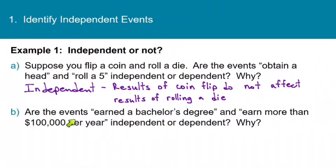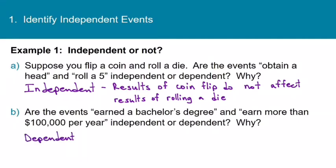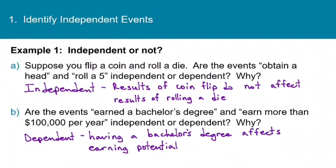In part B, are the events 'earned a bachelor's degree' and 'earned more than $100,000 per year' independent or dependent, and why? We know that people with a bachelor's degree earn more on average. So it's safe to say that earning a bachelor's degree does affect the probability of earning $100,000 a year. These two events are dependent because the occurrence of the bachelor's degree does affect the probability that you'll earn $100,000 a year.